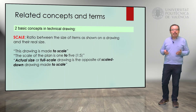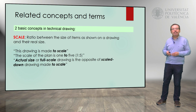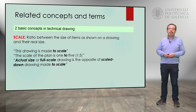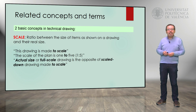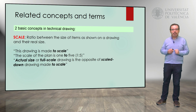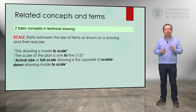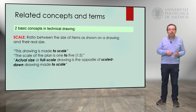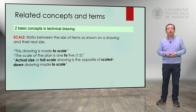Two basic concepts important for technical drawings are scale and tolerance. Scale is the ratio relationship between the size of items as shown on a drawing and the real size of the items. Here we have some examples of expressions related to this concept. We can say 'this drawing is made to scale,' or 'the scale of the plan is 1 to 5' — we use the preposition 'to' to give the scale. We also have actual size or full scale drawings, which are the opposite of scaled-down drawings made to scale.